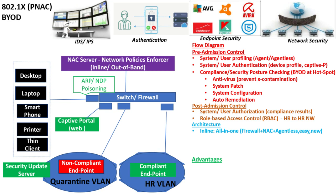Network access control solutions can be deployed in-line or out-of-band. When deployed in-line, all network traffic must pass through the network access control solution before reaching the gateway, meaning it operates in active mode and actively processes all traffic. When deployed out-of-band, there is no need to place it in-line; the solution operates in a passive or monitoring mode.